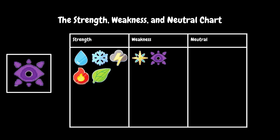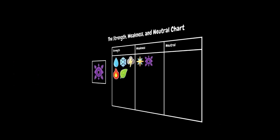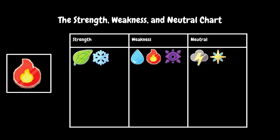Shadow's weaknesses are Astral and itself, and nothing is neutral against it. Fire is a powerful element. Its Strengths are plant and ice. Its weaknesses are water, itself, and shadow. And it's neutral against Astral and storm.